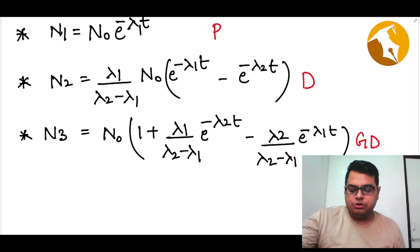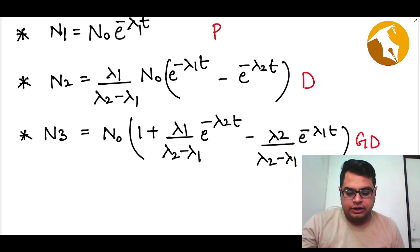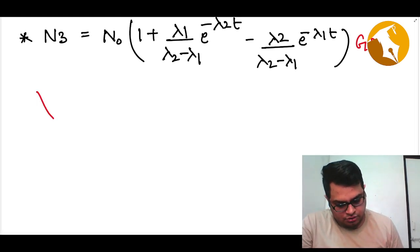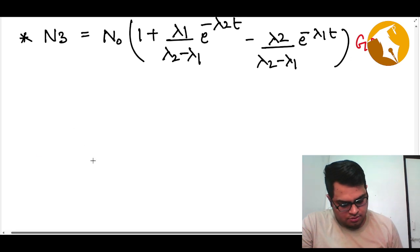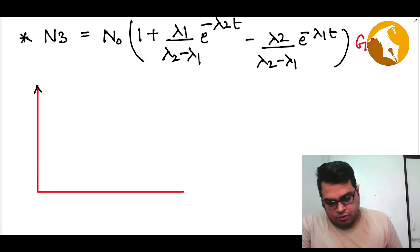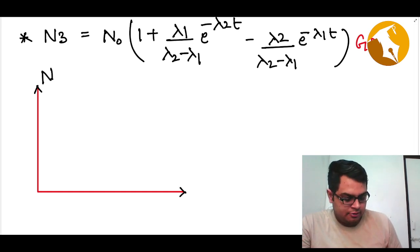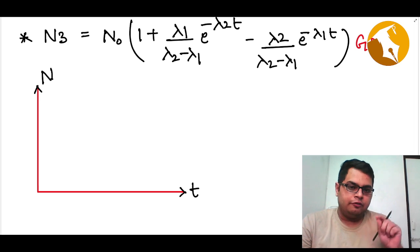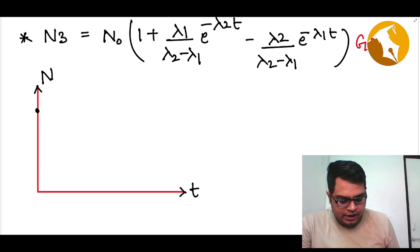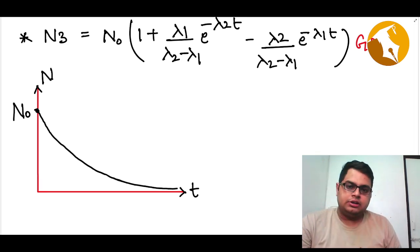Now let's do some graph plotting. If I draw a graph with number of nuclei on the y-axis and time on the x-axis, I will have three graphs — one for parent nuclei, one for daughter, and one for granddaughter. For the parent nuclei, it is very simple: I start with N0 and the parent nuclei just keeps on reducing. That is your graph for the parent nuclei.